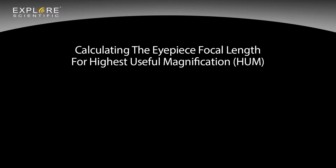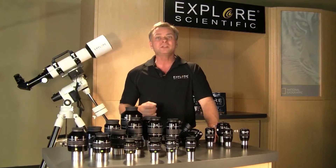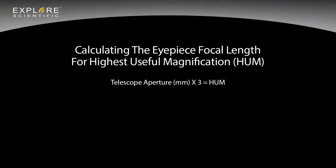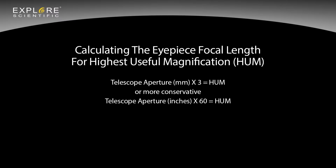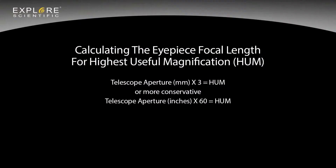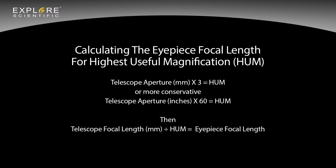To calculate the eyepiece focal length for the highest useful magnification: take the telescope's aperture in millimeters, multiply by three, and that gives you the highest useful magnification number. A more conservative number can be found by taking the telescope's aperture in inches and multiplying it by 60 — or by 50 if seeing conditions are not great. Then take the telescope's focal length in millimeters and divide it by the highest useful magnification number, and that will give you the eyepiece focal length you need.